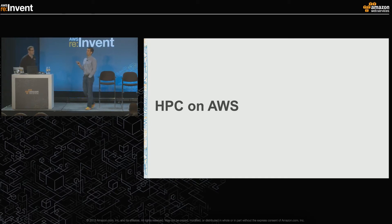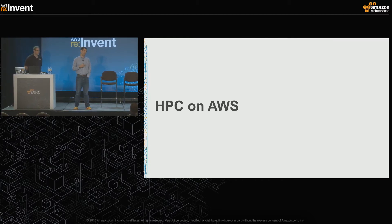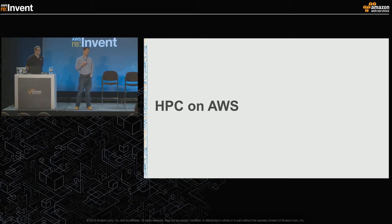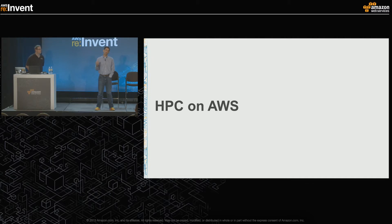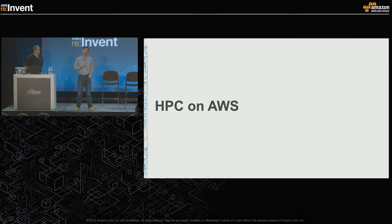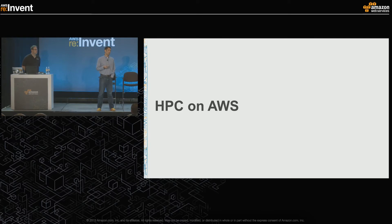HPC on AWS. Before diving in, let's take a step back and define what we mean by HPC - High-Performance Computing. It's been around for a number of years. Typically it started in the government and academia realm with things qualified as supercomputers - usually very large infrastructure requirements consuming large amounts of power and cooling. Slowly that approach moved into the commercial space, and now we're seeing more and more adoption of HPC in the cloud on AWS.